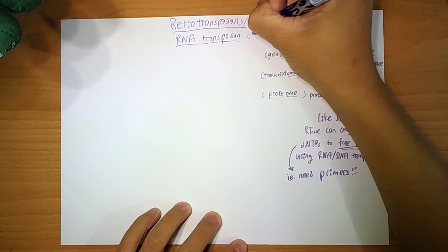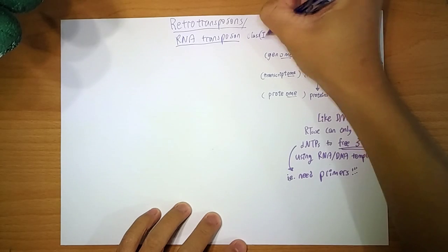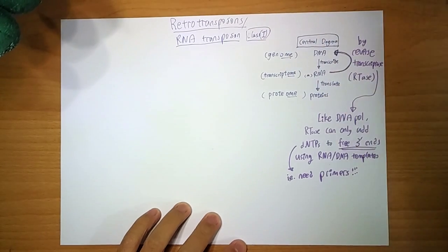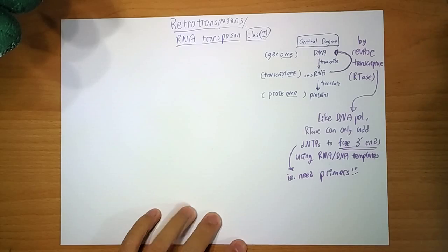So RNA transposons are class 1, as mentioned before. I don't know why they classify it that way.